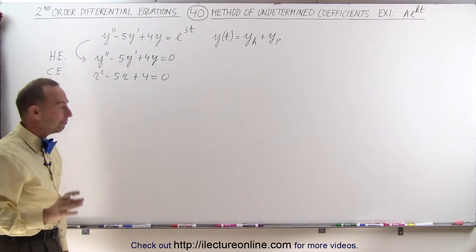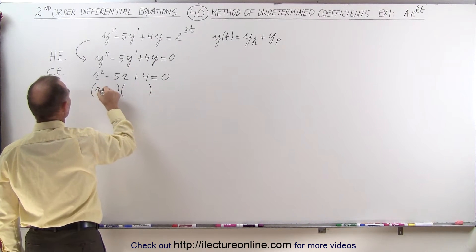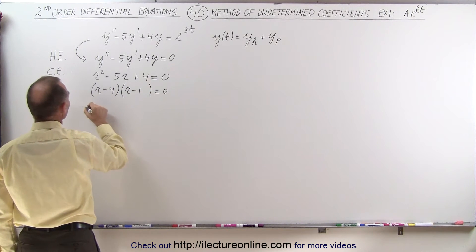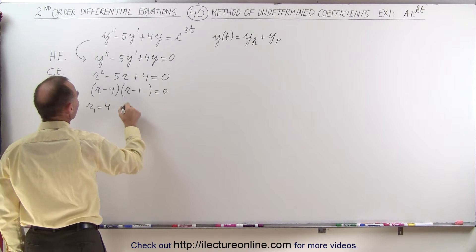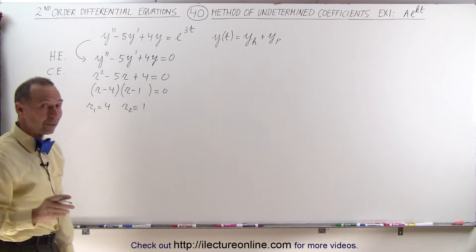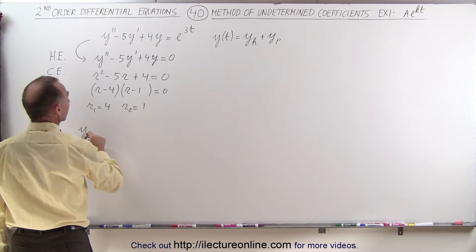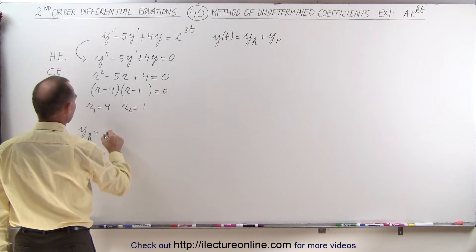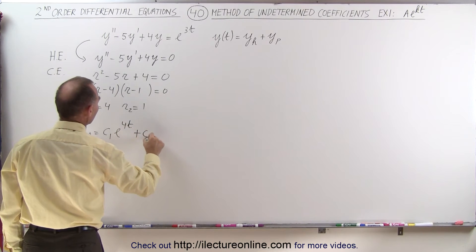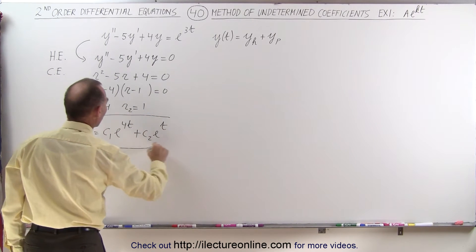That's easy to factor: (r minus 4)(r minus 1) equals zero, which means r1 equals 4 and r2 equals 1. We can then write down the homogeneous part of the solution: y_h equals c1*e^(4t) plus c2*e^(t).